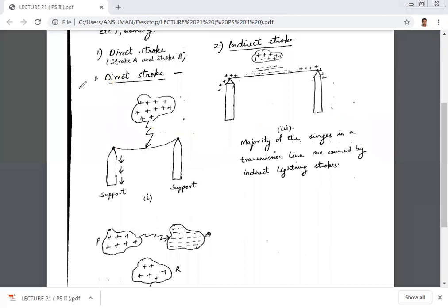As we see in this diagram, stroke A: when a cloud of positively charged particles, this will induce the negative charge particles, negatively charged electrons, on the transmission line.